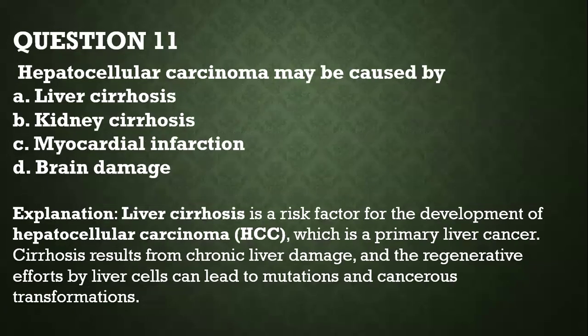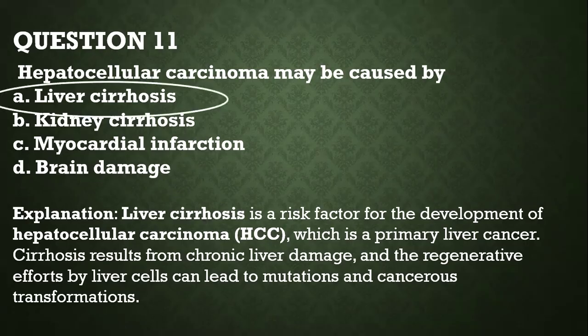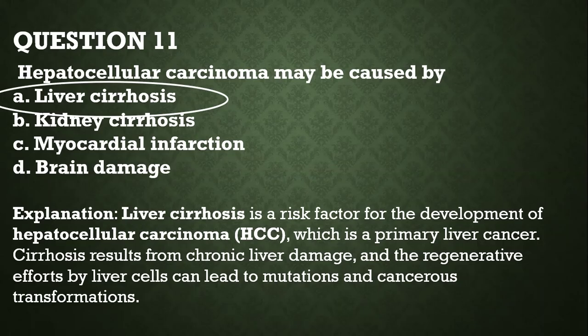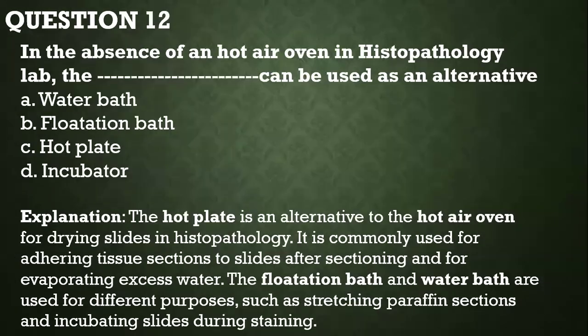Question number eleven: hepatocellular carcinoma may be caused by — liver cirrhosis, kidney cirrhosis, myocardial infarction, or brain damage. The answer is liver cirrhosis, because liver cirrhosis is a risk factor for the development of hepatocellular carcinoma, which is primary liver cancer. Cirrhosis results from chronic liver damage, and the liver's efforts to regenerate can lead to mutations and cancerous transformation.